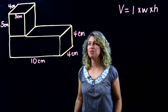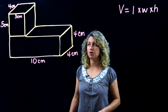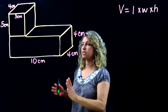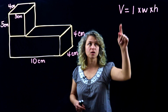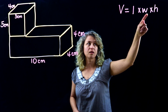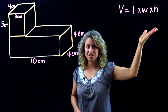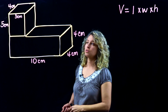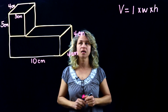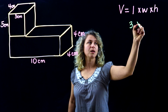Today we're going to look at volume — specifically additive volume. We have a shape made up of two different shapes put together, and what we want to do is find the volume of each one by finding the length, width, and height. We multiply when we're finding volume, so let's take the first shape and look at the length, which is three.